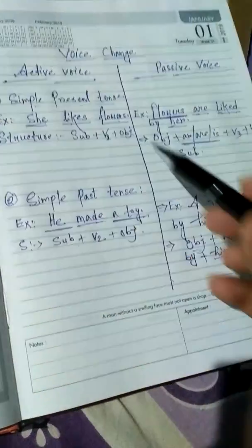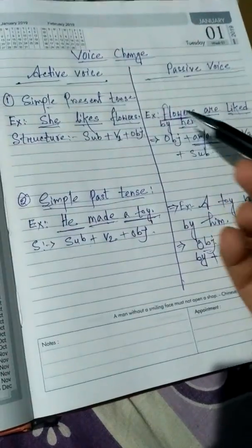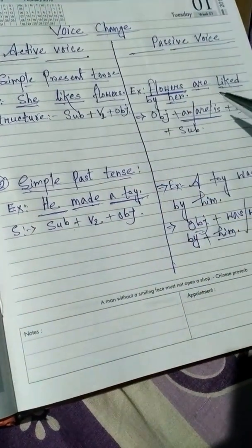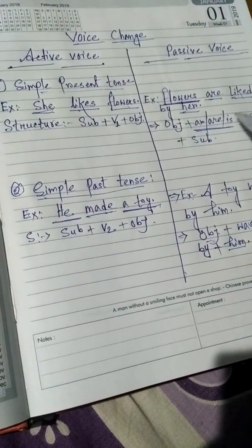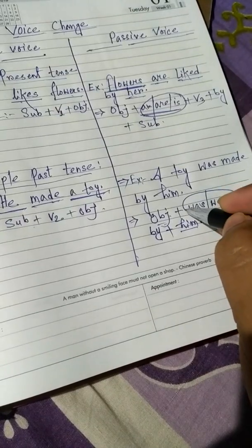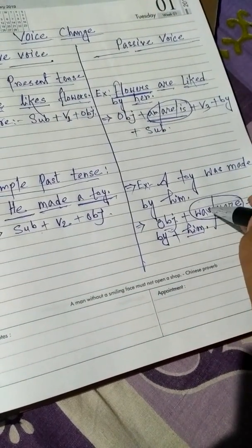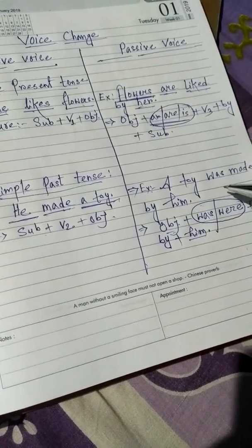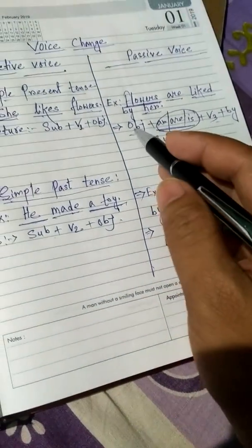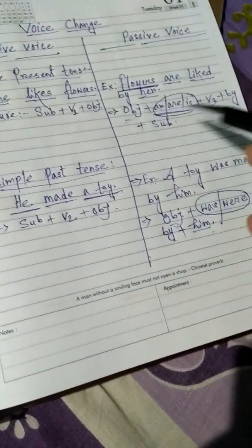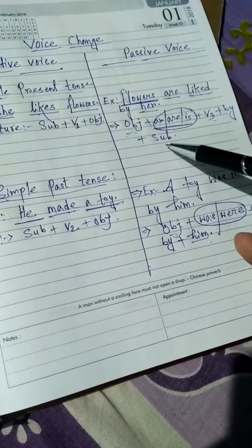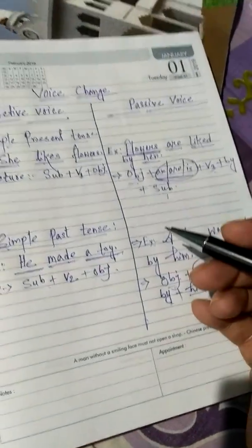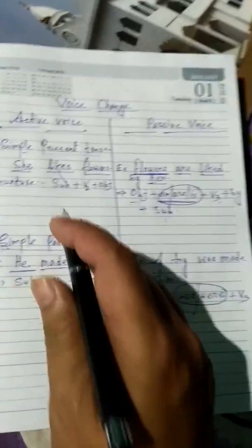So what is the difference between simple present tense and simple past tense when you do voice change from active to passive? The difference is only in the helping verbs. In simple present, you write 'am', 'is', or 'are'. In simple past, you write 'was' or 'were'. The rest is the same: the object comes first and the subject comes last.